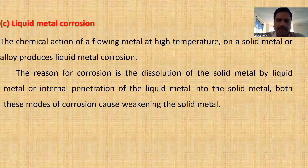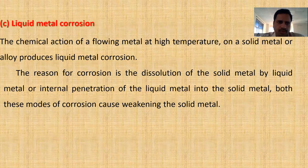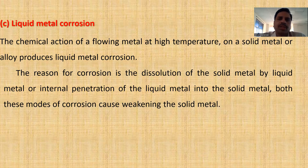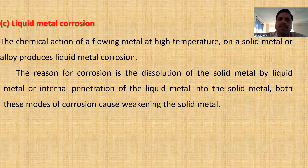Liquid metal corrosion is a dry corrosion method. The chemical action of a flowing liquid metal at high temperature on a solid metal or alloy produces liquid metal corrosion. When any flowing liquid at high temperature is in contact with the metal, either the metal may dissolve in the liquid or the liquid may penetrate into the metal and cause corrosion. This type of corrosion is generally observed in boiler corrosion.